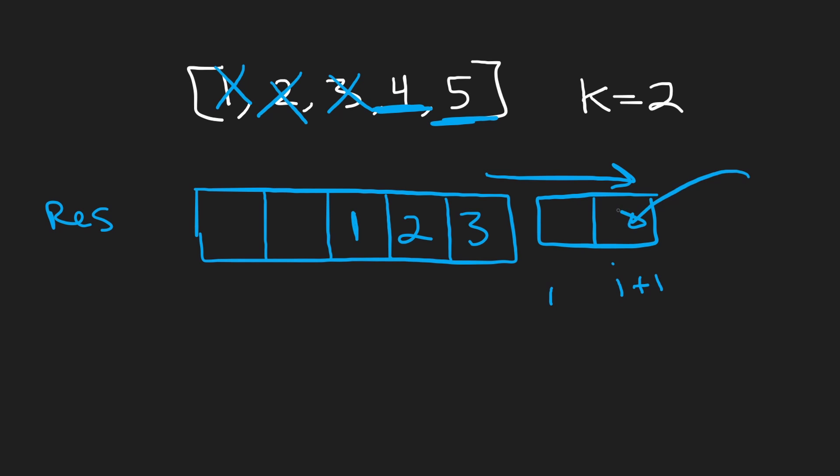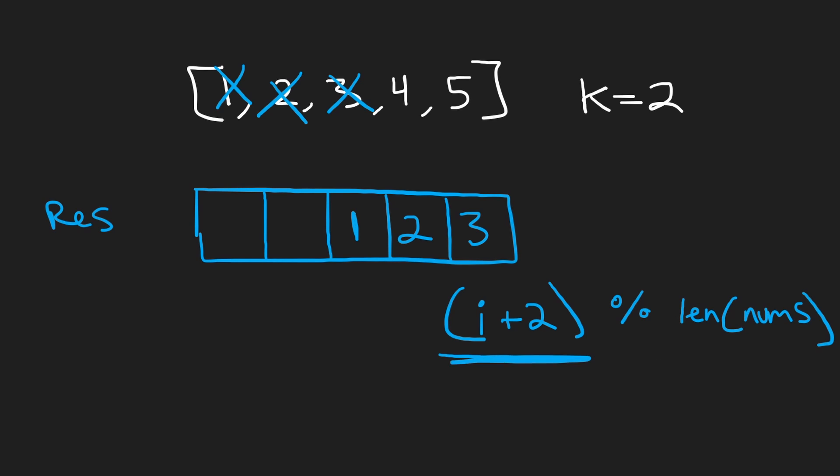And similarly for this five if we shift it by two we're going to end up over here like in the second position out of bounds. But in reality we want to put it over here. A good way, a clean and easy way to get around this math is basically take i plus two. Since this value could be out of bounds it could be greater than the length of this array. We want to take this mod it by the length of the input nums.